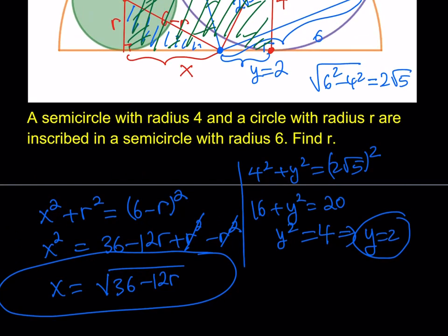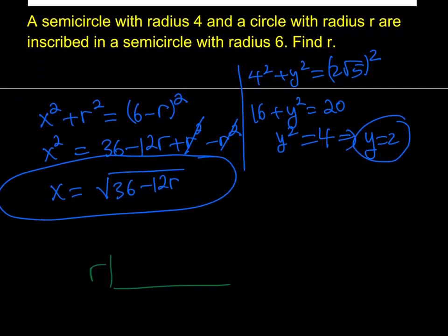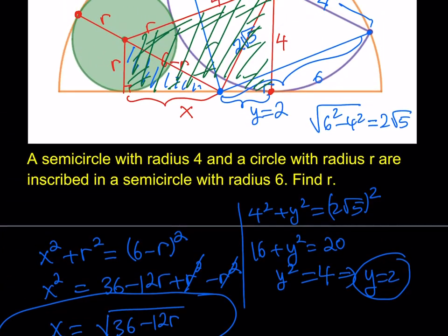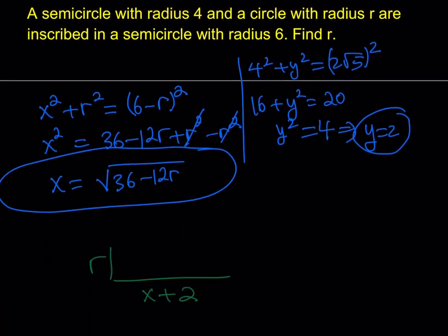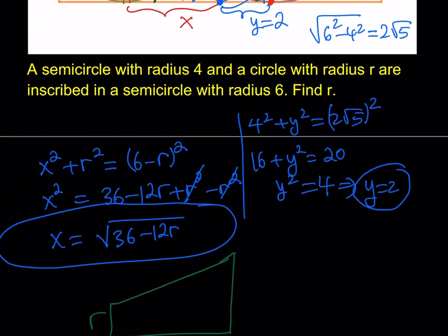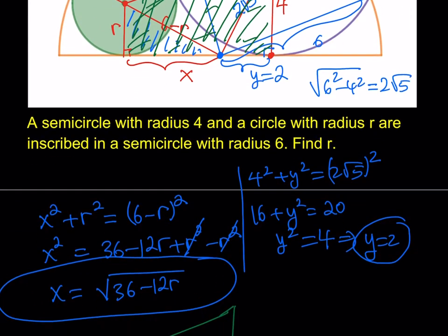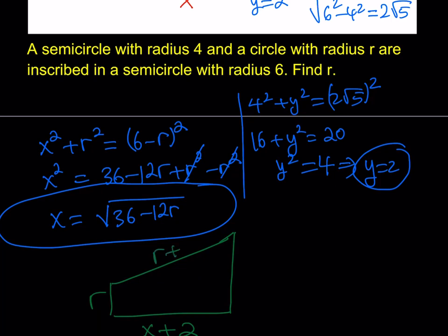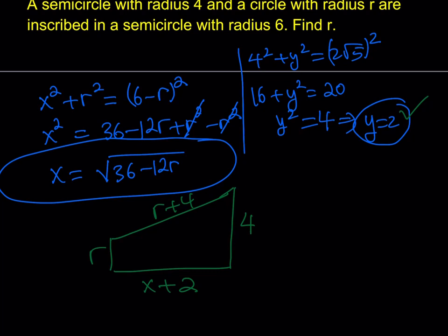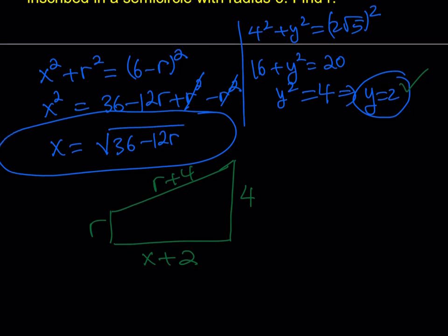So this is what I have. I have the r this way. And then I have this length here, which is x plus 2, right? And I know x in terms of r, so that's kind of nice. And then I have this little, what do you call that? A little slanted line here, and then another perpendicular. And that slanted line is r plus 4, and this is 4. Beautiful. Now we just got to work this out. We are done with y, so we don't have to worry about it anymore. We have x in terms of r. That's also good. If I can write another equation here, then I should be good.